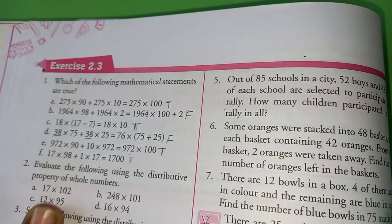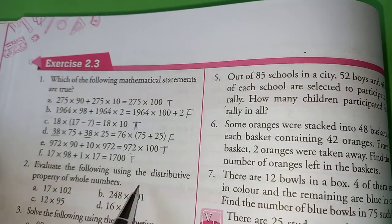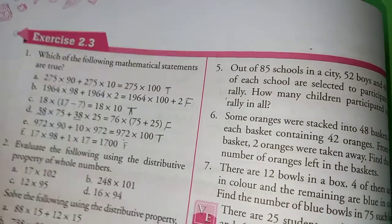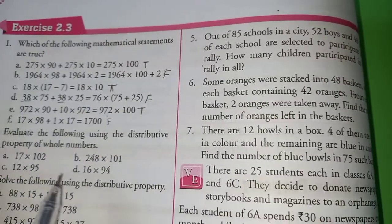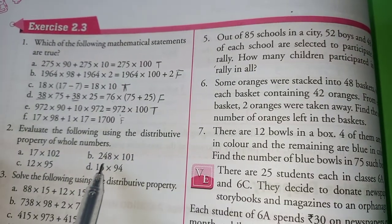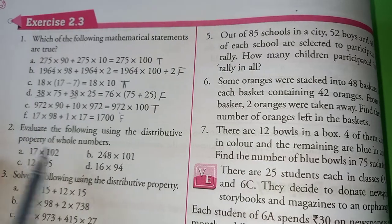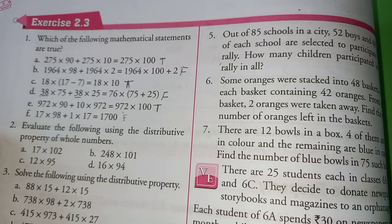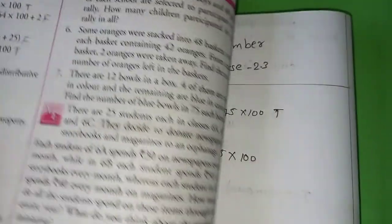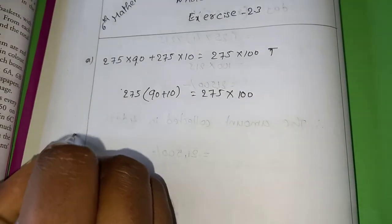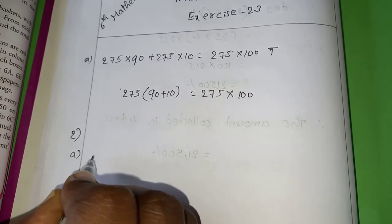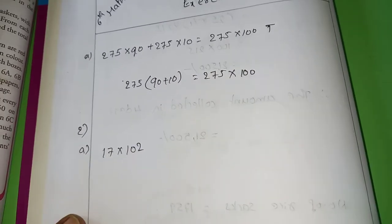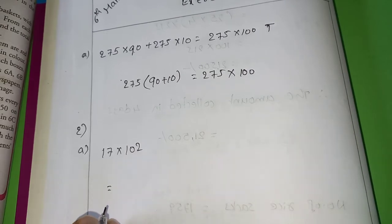Now, second question. Evaluate the following using the distributive property of whole number. What they are asking? I will explain only two. You have to do remaining by your own. We have to calculate the answer using the distributive property. Second question, A, 17 into 102. We have to get the answer.